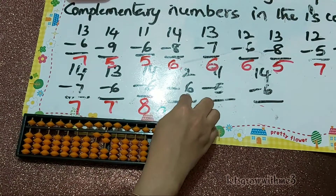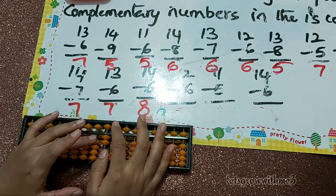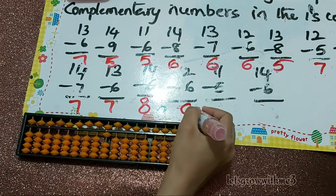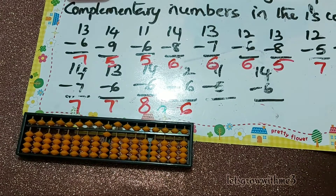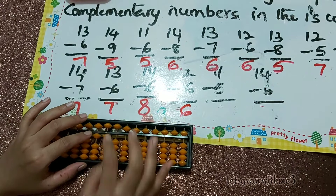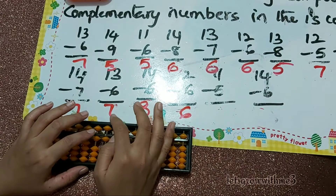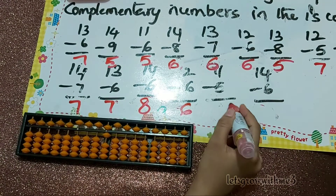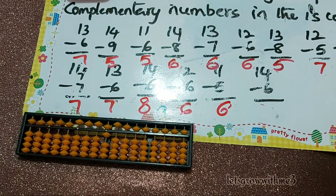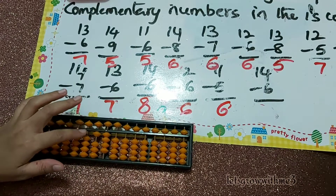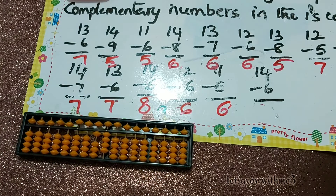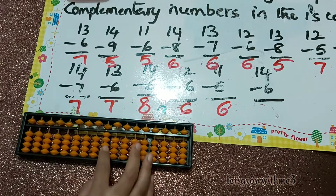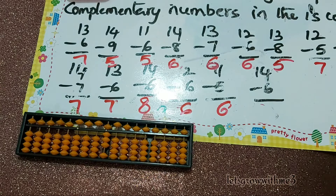Next: 12 minus 6. Papa down, mama down, baby down — so the answer is 6. 12 minus 6 is equal to 6. Next: 11 minus 5 — minus 10 plus 5, so the answer is 6. Next: 14 minus 6. Papa down, mama down, baby down — minus 10 plus 5 minus 1. So the answer is 8.